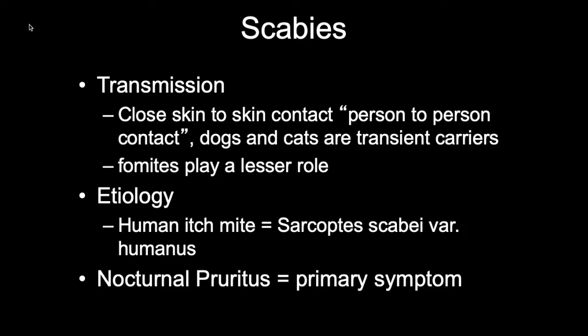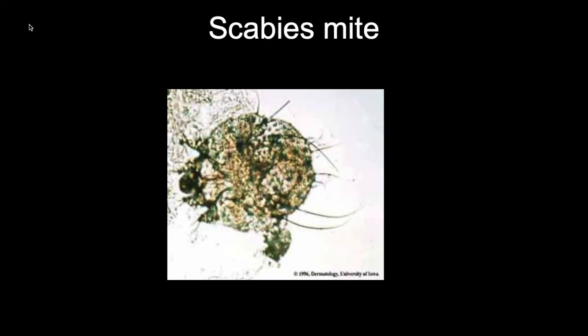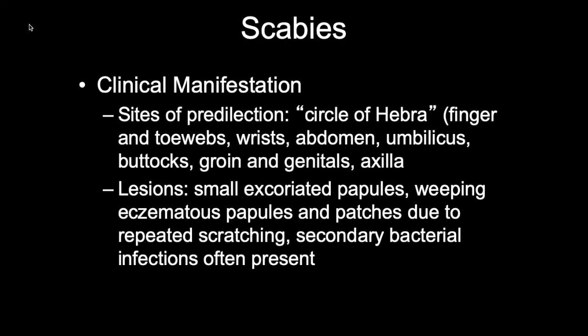Here are some photos of the scabies mite — the adult scabies mite. The lesions of scabies are often described as small excoriated papules. Because they are also very itchy, patients tend to scratch, so often you see also weeping eczematoid papules and secondary bacterial infections.